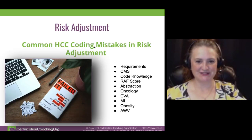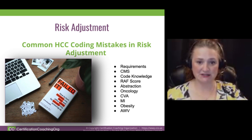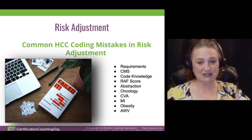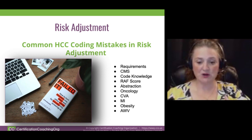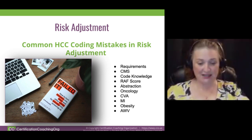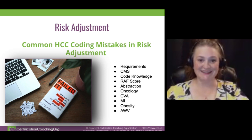Fantastic topic this time. We're going to be talking about risk adjustment and some of the common HCC mistakes in risk adjustment. We'll cover documentation requirements, CMS, coding knowledge, the RAF score, and abstraction. Then we'll look at the big ones that give people problems: oncology, CVAs, myocardial infarctions, and obesity. We'll also look at the annual wellness visit and what can be abstracted during that once-a-year visit.